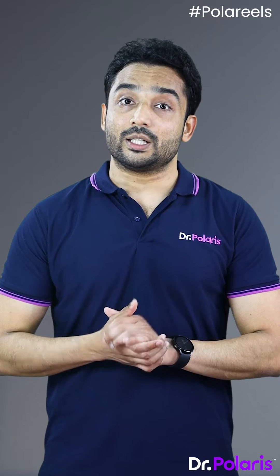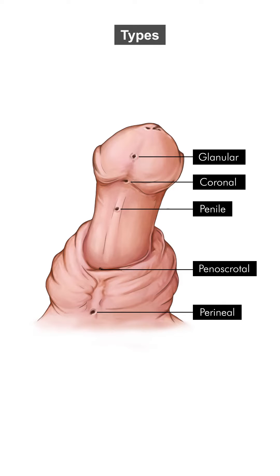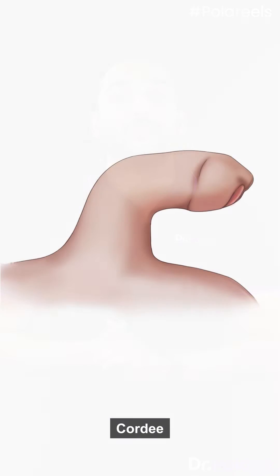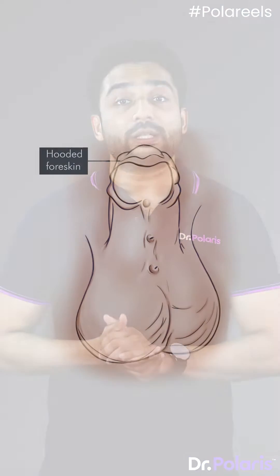Classification is based on the location of the external urethral meatus. It is divided into glandular, coronal, penile, penoscrotal, and perineal types.